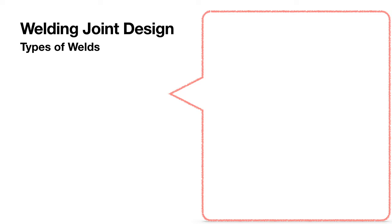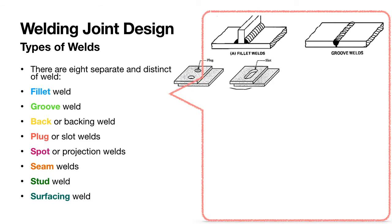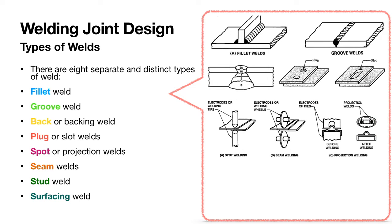Since we know that a weld is basically a permanent union between materials caused by heat and/or pressure, there are basically two main types of weld: fillet weld and groove weld. But there are other approaches as well, such as slot weld, seam weld, spot weld, stud weld, etc.